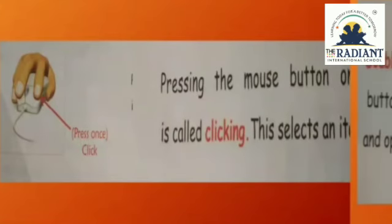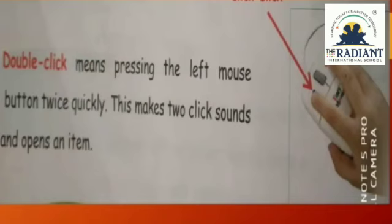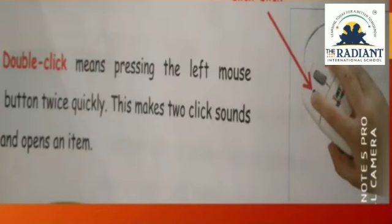Double click means pressing the left mouse button twice, and quickly too. It makes two click sounds and it opens the item. If we want to open a program and we do a single click, it only gets selected — it does not open. But if we double-click, then only that program will open.